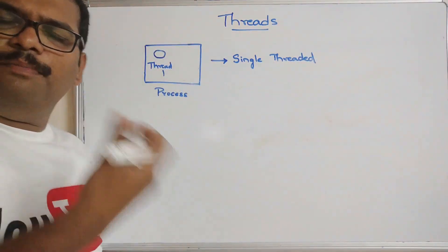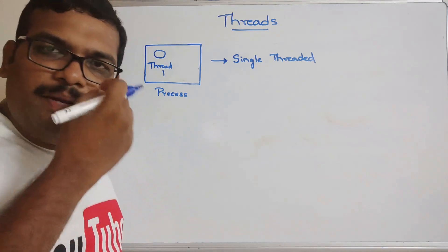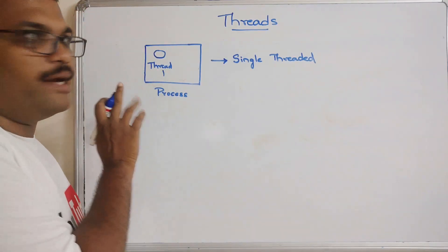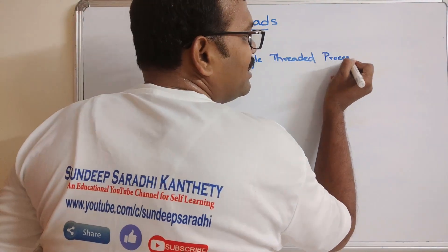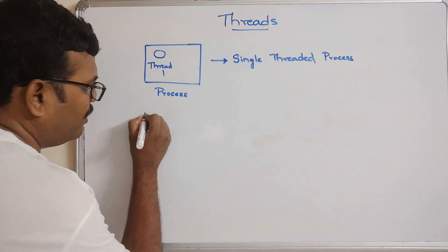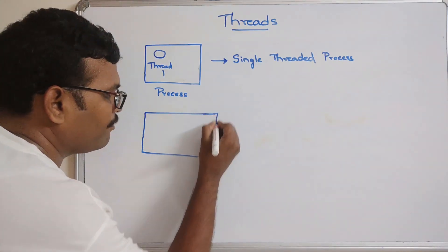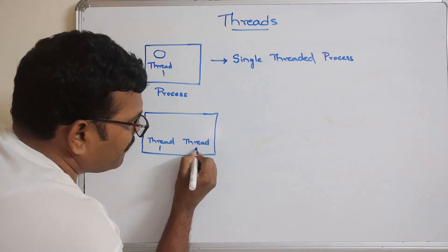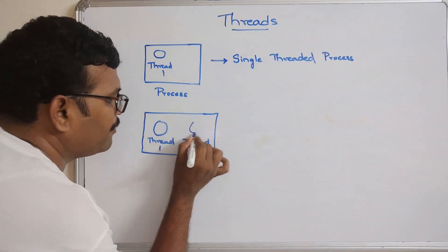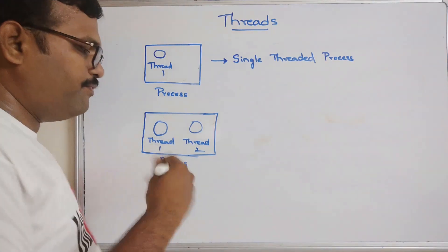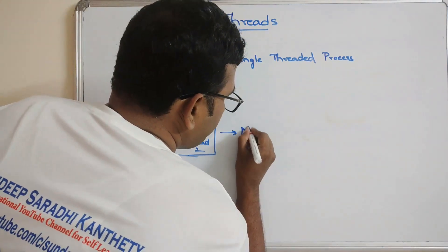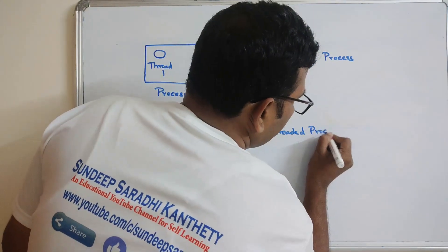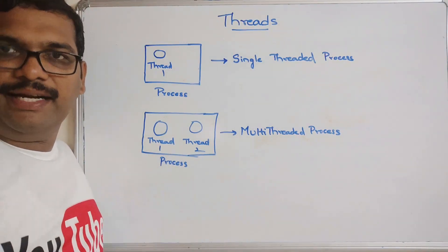It is not mandatory that every process will have multiple threads. Depending upon the application, a process may have a single thread or multiple threads. If the process is having only one thread, that is called a single-threaded process. And if the process is having multiple threads — thread one, thread two — this is known as a multi-threaded process. The name itself indicates the process will be having multiple threads.